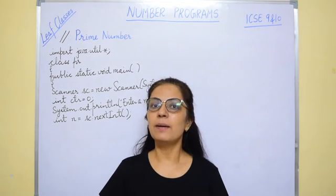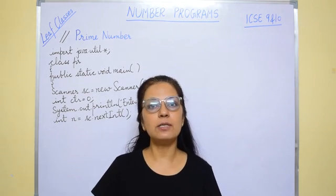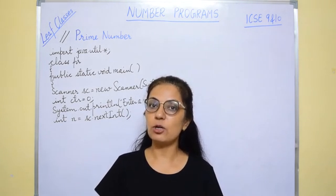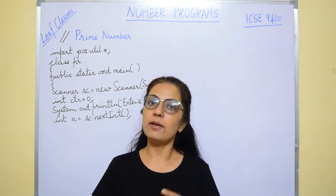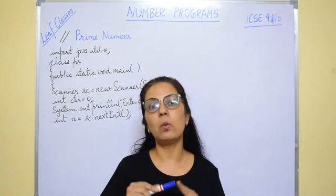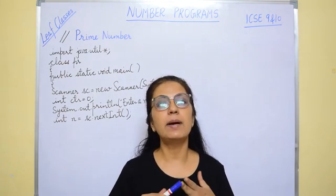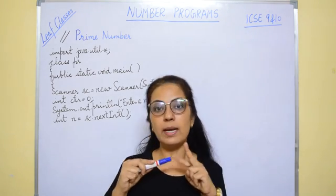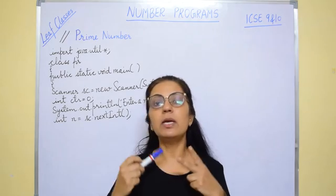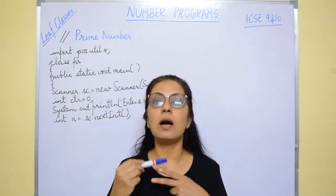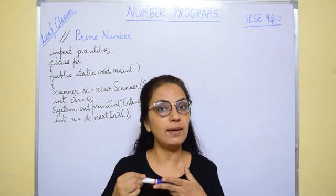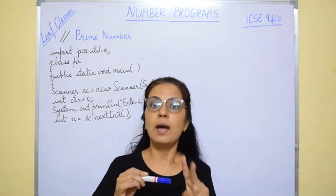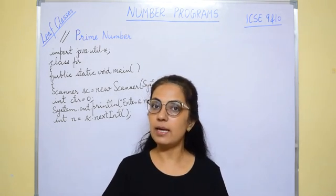We start with the prime number. The question is to input a number and check whether it is a prime number or not. In maths, we know the definition of prime number: if a number is divisible only by one and itself, then that number is said to be a prime number. That means a prime number has only two factors — one and itself.